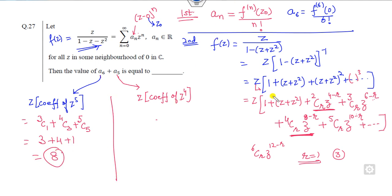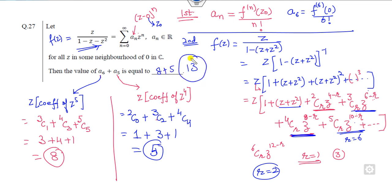How you find this one? Z raised to power 4. Is there any term which is Z raised to power 4? R is equal to 0. So when R is equal to 0, it will be 2C0. Is there any term corresponding to Z raised to power 4? Yes, R is equal to 2. When R is 2, it is 3C2. In this term, R is equal to 4. It's 4C4. Is there any term corresponding to Z raised to power 4? R is equal to 6, but there is no term R equal to 6 here. What is the answer? This is 1, 3, 1. It's 5. So what is the answer? 8 plus 5 is 13, the correct answer.